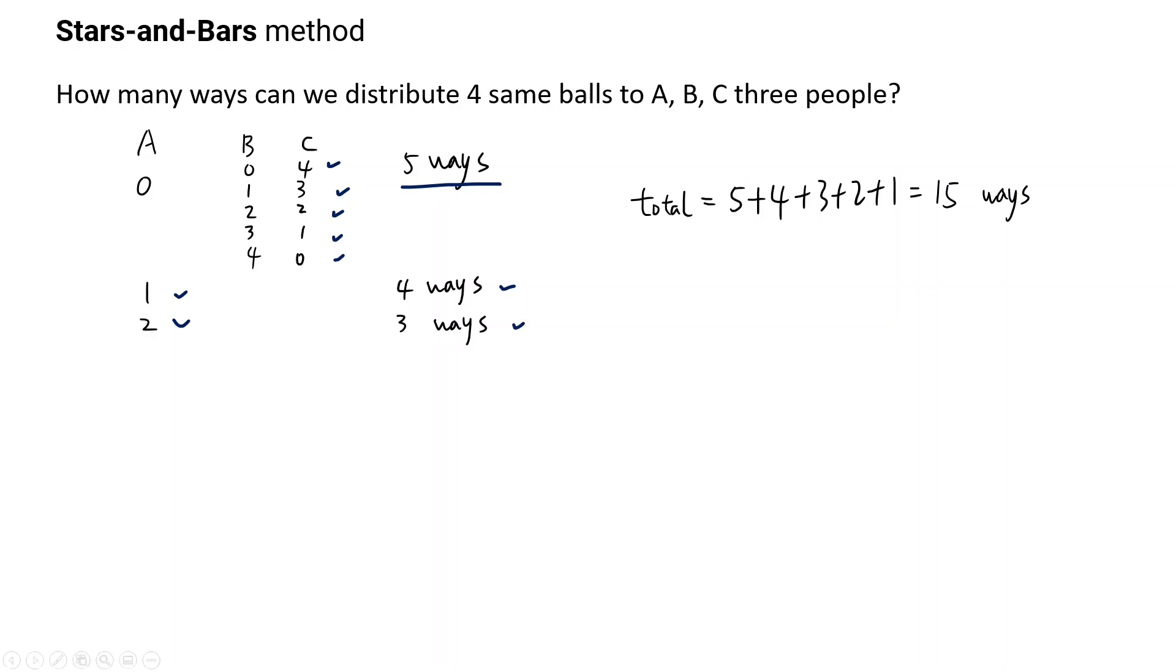This general method works well when the number is small. But what about when the number becomes very big? Say we have to distribute 10 balls to three people. Then it's going to be harder to think about.